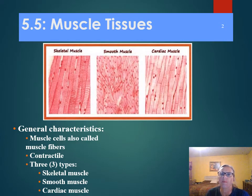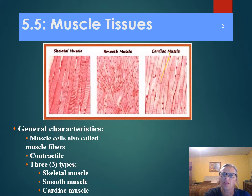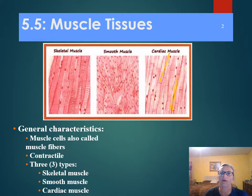We can call muscle cells muscle fibers because they are elongated, so they look like a fiber. This long section here is a cell — this is a muscle cell or a muscle fiber. We kind of use those terms interchangeably.